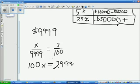And then you would divide that by 100 and X would equal $299.97.